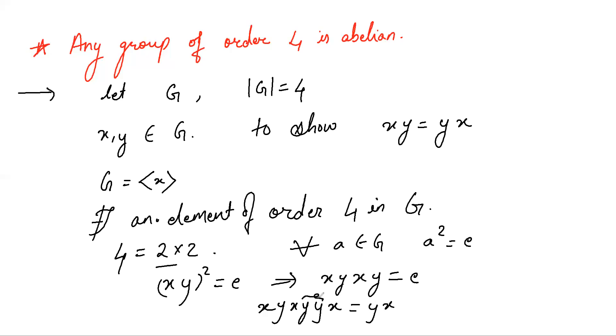Now this term is y squared x y squared, and since for all a belongs to G, a squared is e, this term becomes xy·xe·x which is nothing but xy·x squared. Again x squared is e, so this is xy.